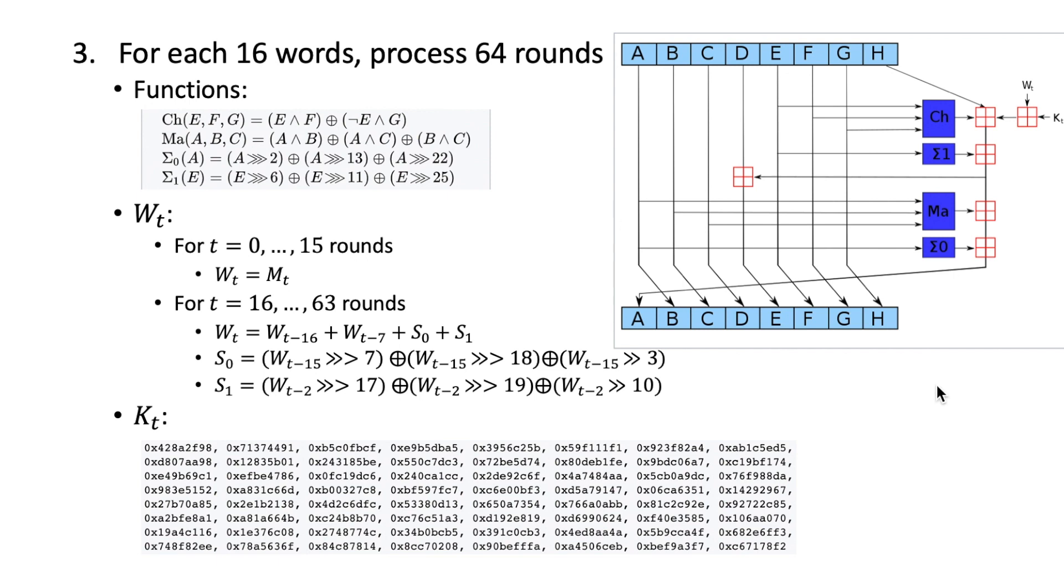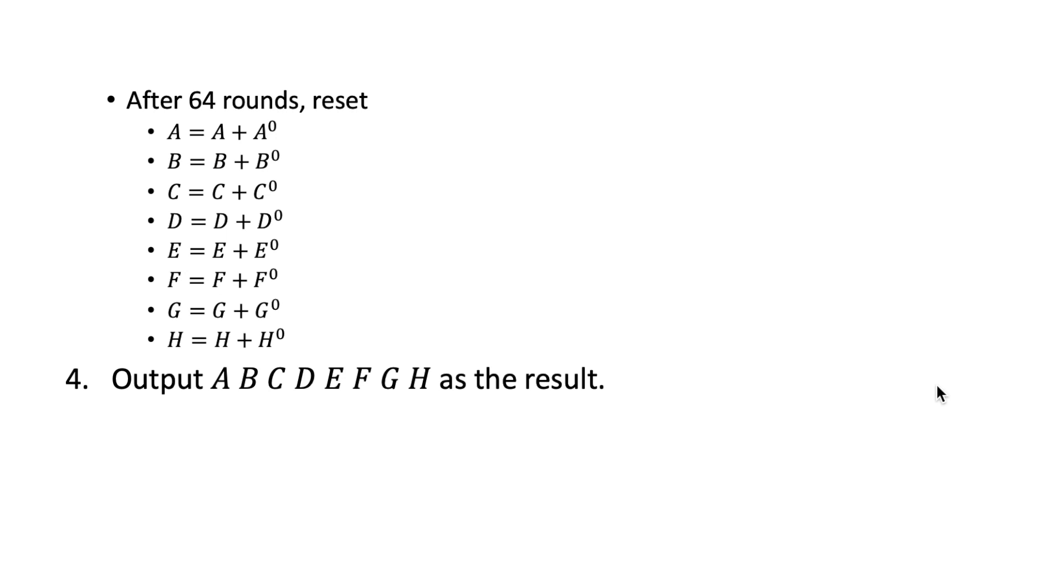So these are the operations. After 64 rounds we're going to compute the result as A equals A plus A0, like that.